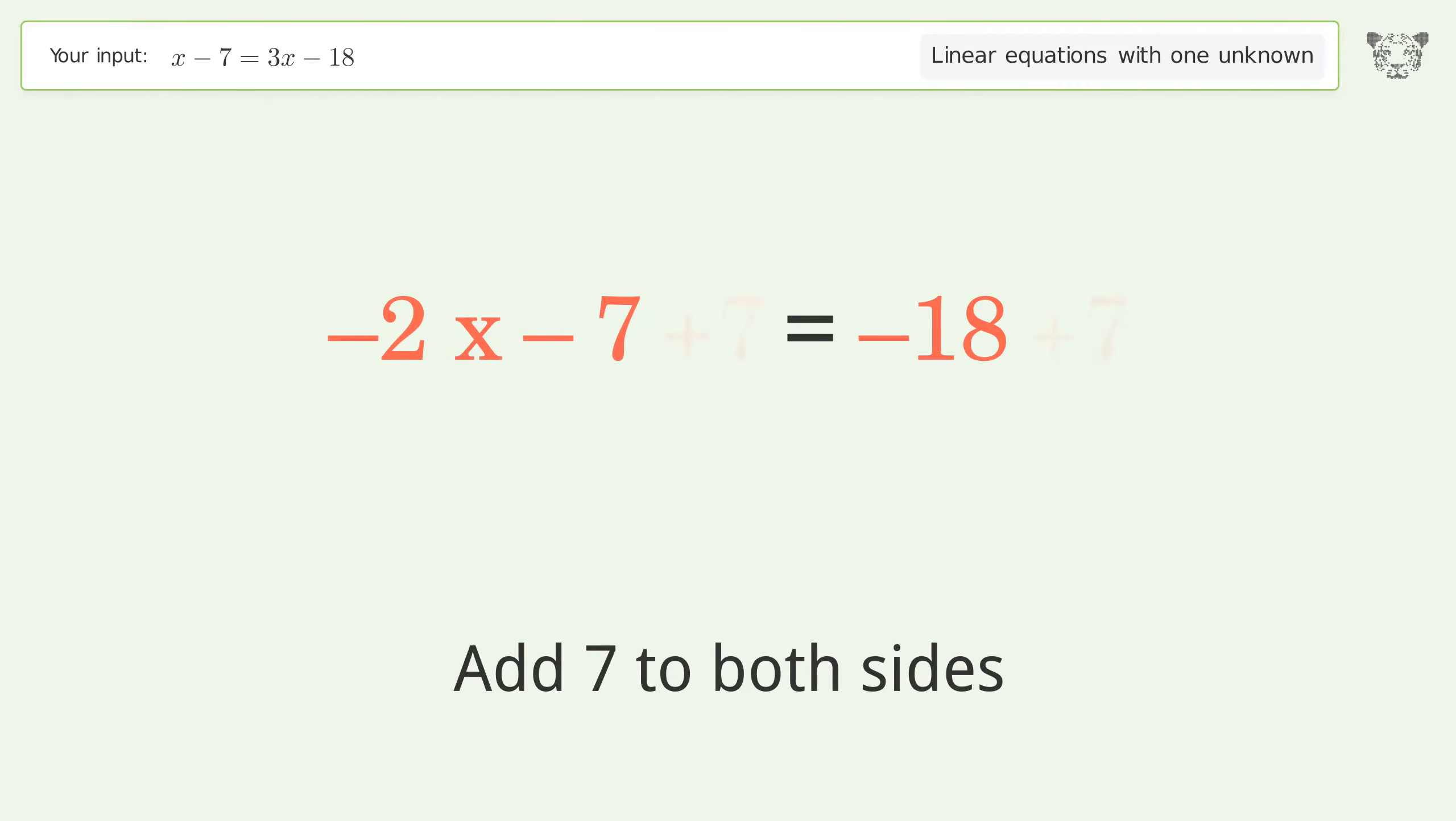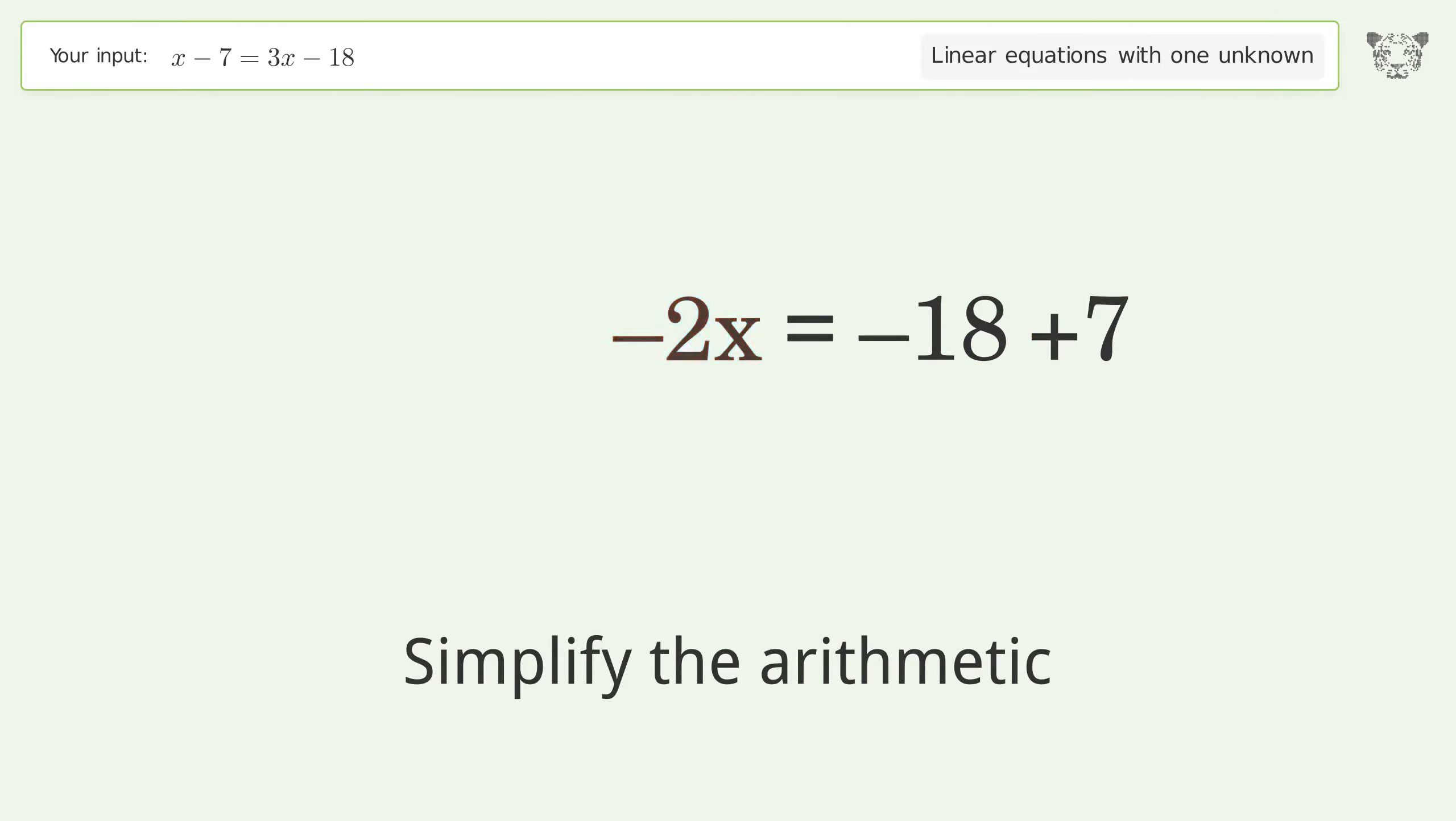Group all constants on the right side of the equation. Add 7 to both sides. Simplify the arithmetic.